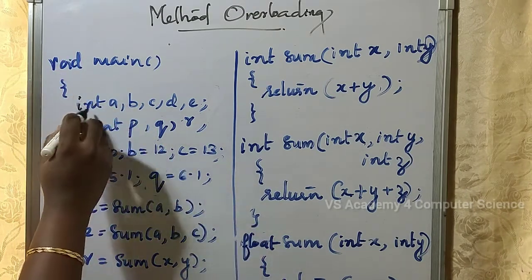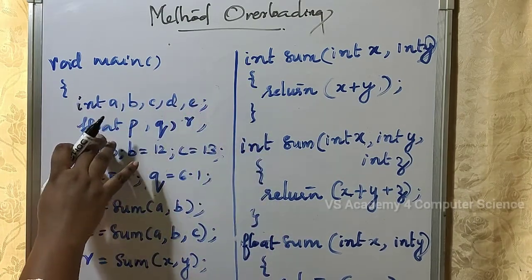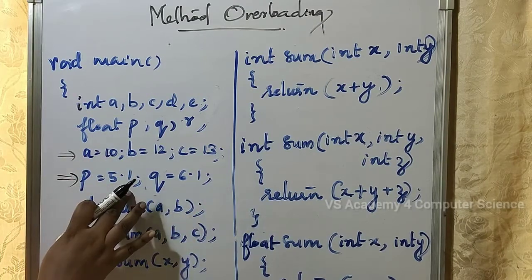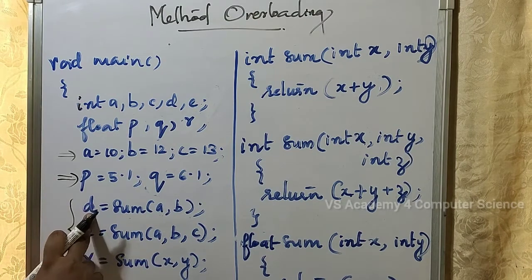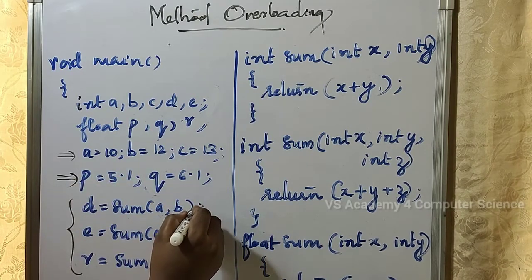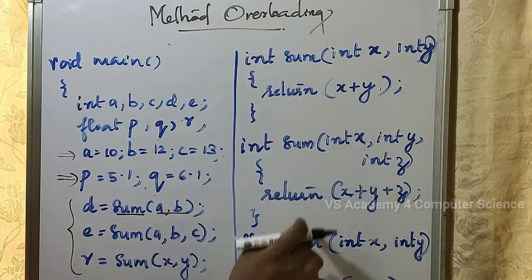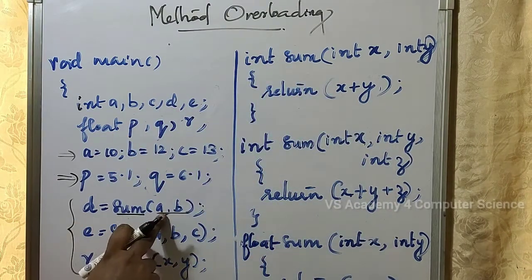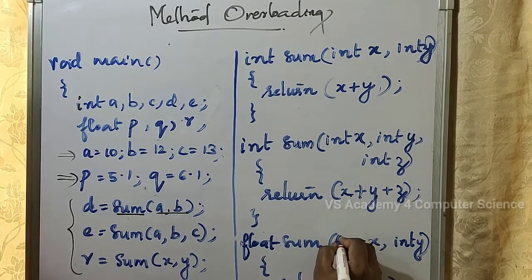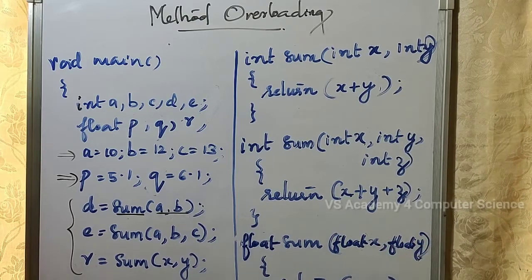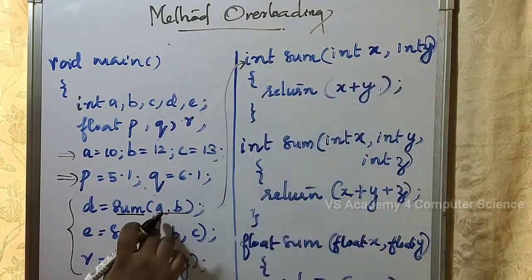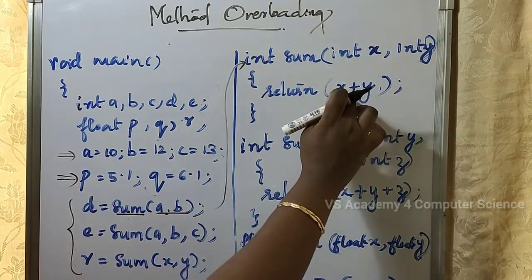Here, a function takes int a, b, c, d, e as parameters. For the first function, we pass two integer arguments a and b. This function holds two integer arguments a and b and returns their sum. For example, passing 10 and 12 will return 10 plus 12.